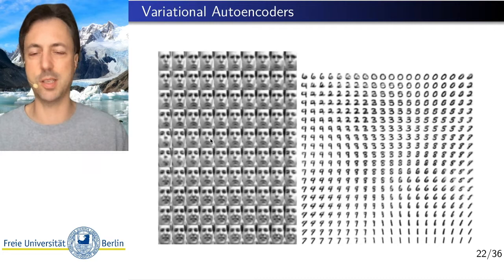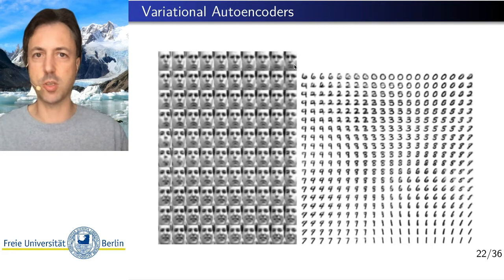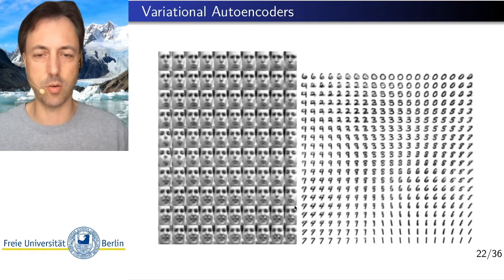Whereas if you would do this interpolation directly in pixel space, you would just get complete garbage in between here. You would just get noise.